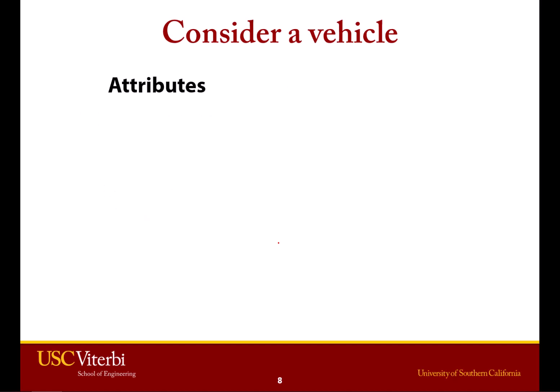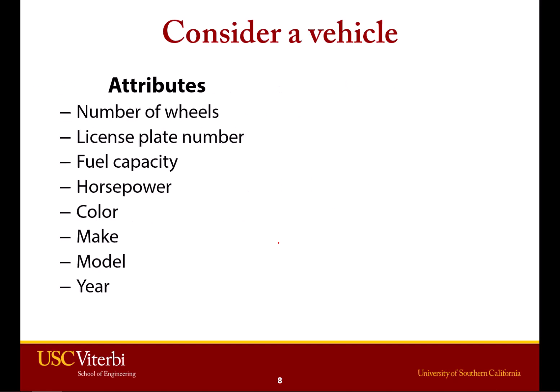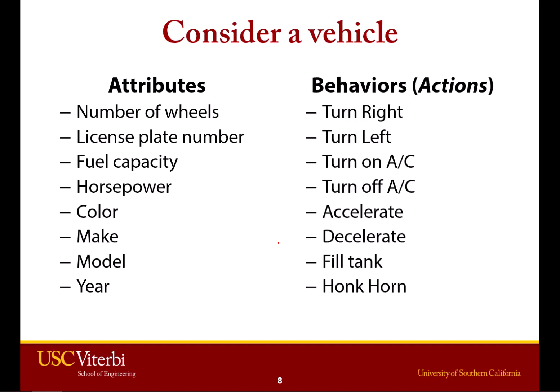Looking at attributes, or facts about cars: we might store how many wheels the car has — could be a motorcycle or maybe 18 wheels. It can have the color, the make, the model — these are facts about a car, information you'd want to store to represent one in software. If you're designing a car, maybe even in a video game, these are things a car could do — actions it could take: accelerate, decelerate, honk a horn, turn right, turn left, and some others as well.